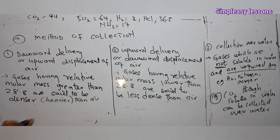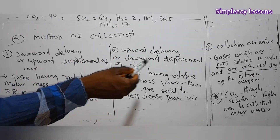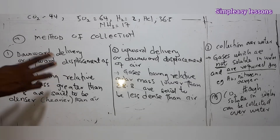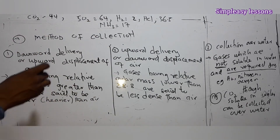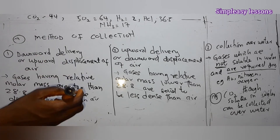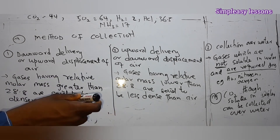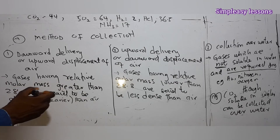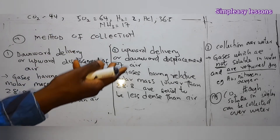The three methods of collection are: first, downward delivery or upward displacement of air; second, upward delivery or downward displacement of air; and third, collection over water. For downward delivery, the gas must have a relative molar mass greater than that of air — it is heavier than air, so it will not float but will sink.